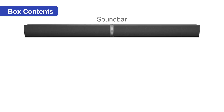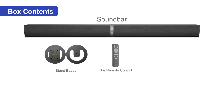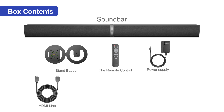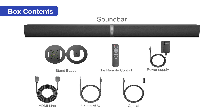Inside the box, you will find the KY2020D soundbar, two stand bases, a remote control, power adapter and HDMI cable, 3.5 mm auxiliary audio cable, optical cable, and a 3.5 mm auxiliary to RCA cable. If there is any damage or omission in the package, please contact us as soon as possible.